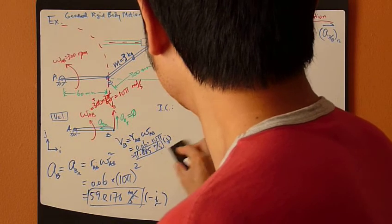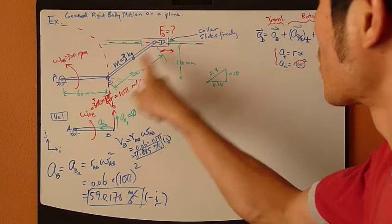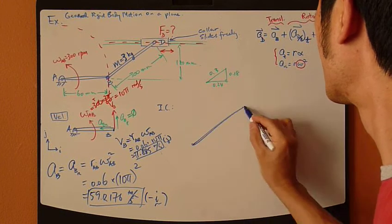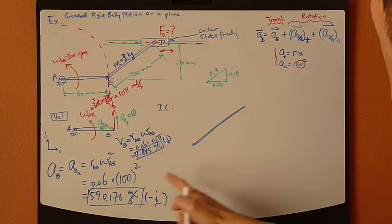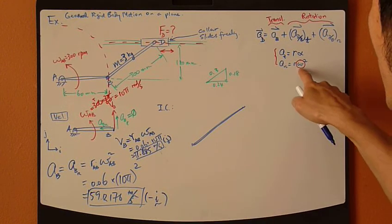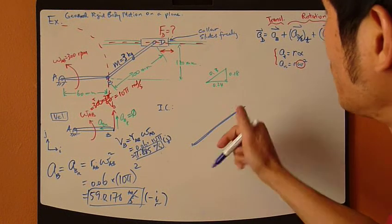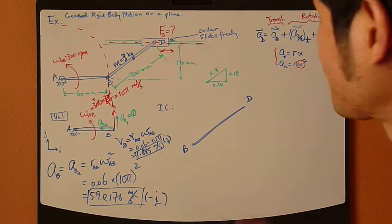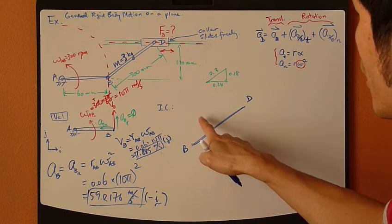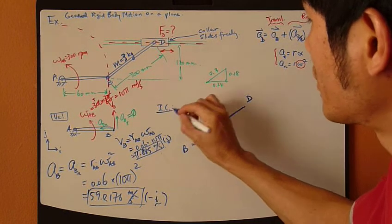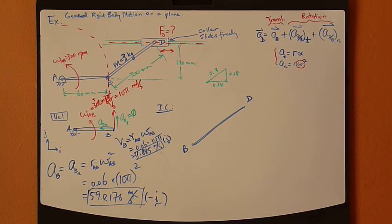So, now we can proceed for length BD. Now, we might, eventually, we would like to find omega of BD. So, to find velocity, or angular velocity, I'm going to use the instantaneous center method.